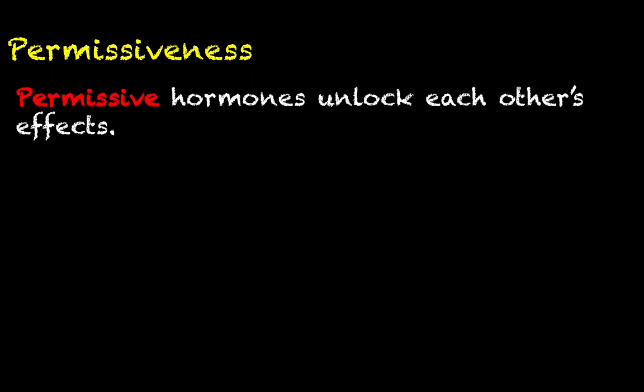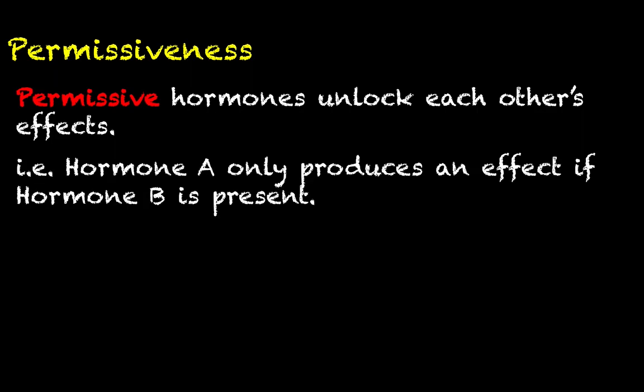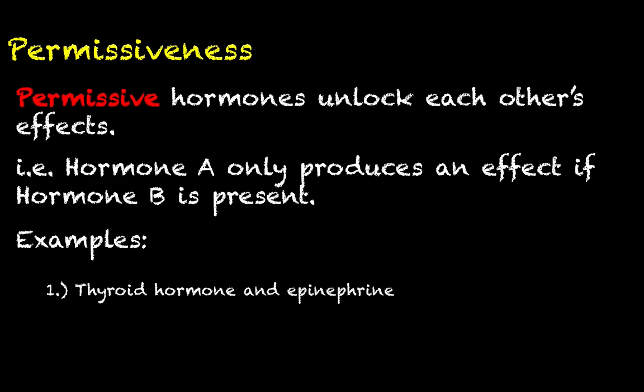The next type of interaction is called permissiveness. Permissive hormones unlock each other's effects. This sounds a little like synergy, but there's an important contrast: hormone A only produces an effect if hormone B is present. That is different from synergy, because with synergy both hormones produce effects individually. With permissiveness, hormone A will only produce any sort of effect if hormone B is also present.